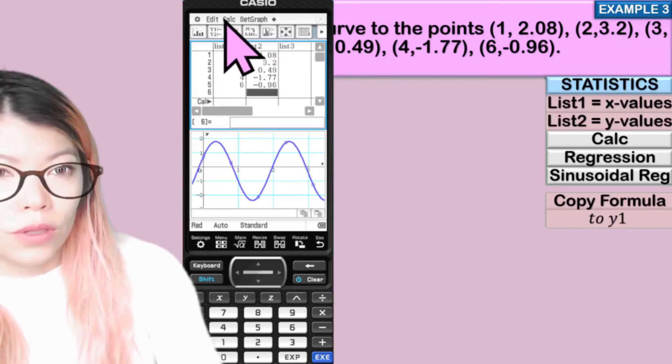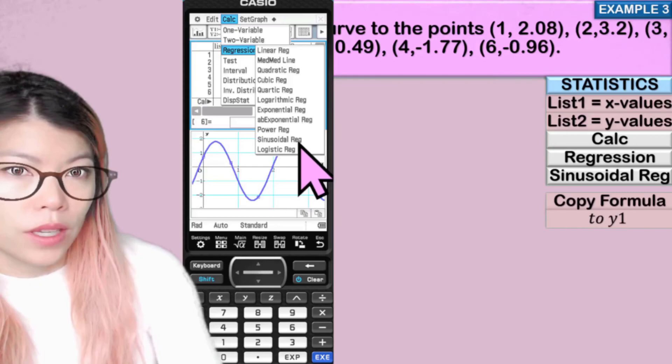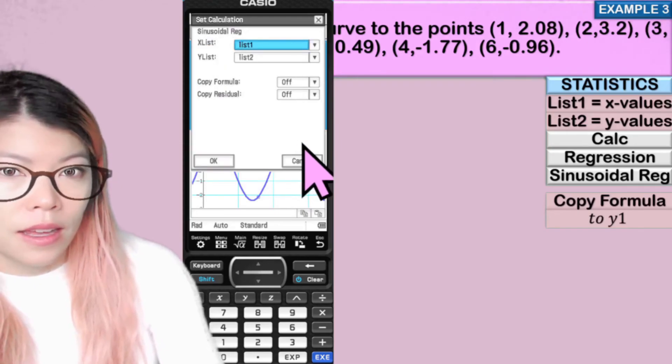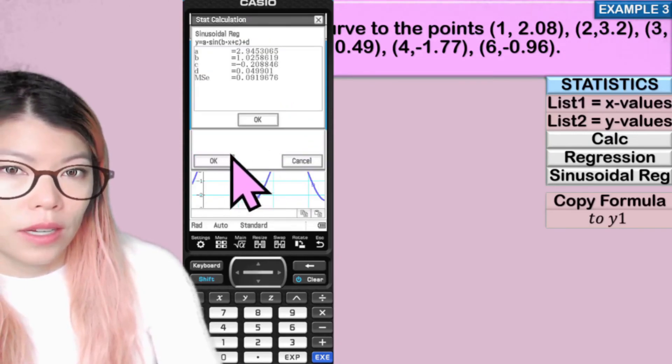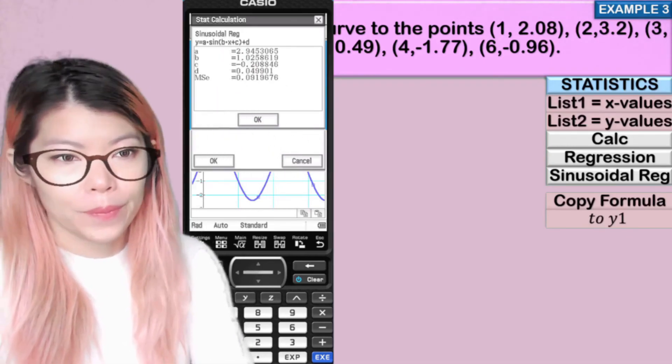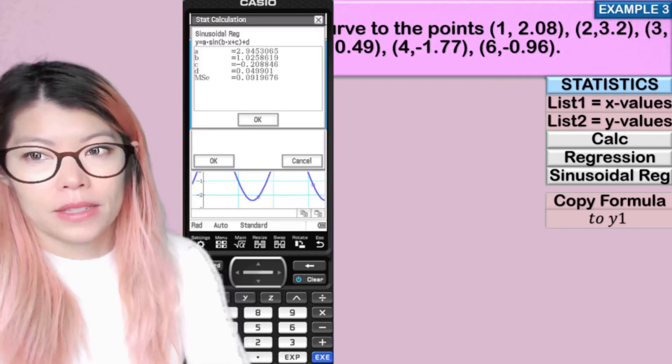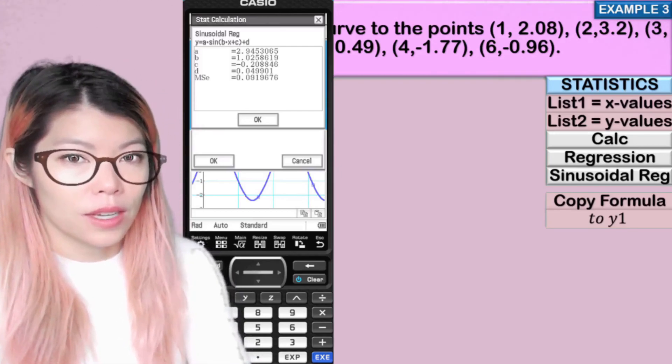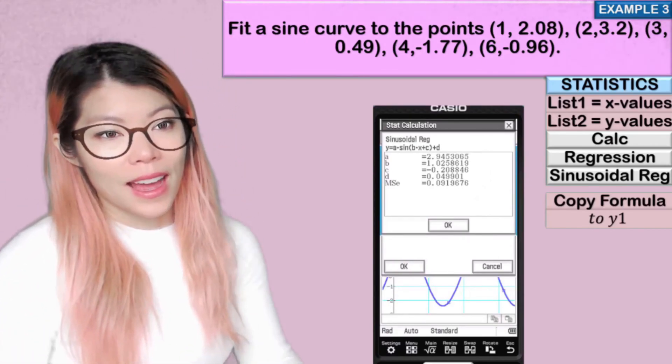And then again, do you remember what to do? So you go to calc, regression, and we're looking at sine again. And copy formula to one. Press okay. And then it has your ABCD values to plug into that. So you can write down your equation using those values. Thank you for watching and practice using your CAS.